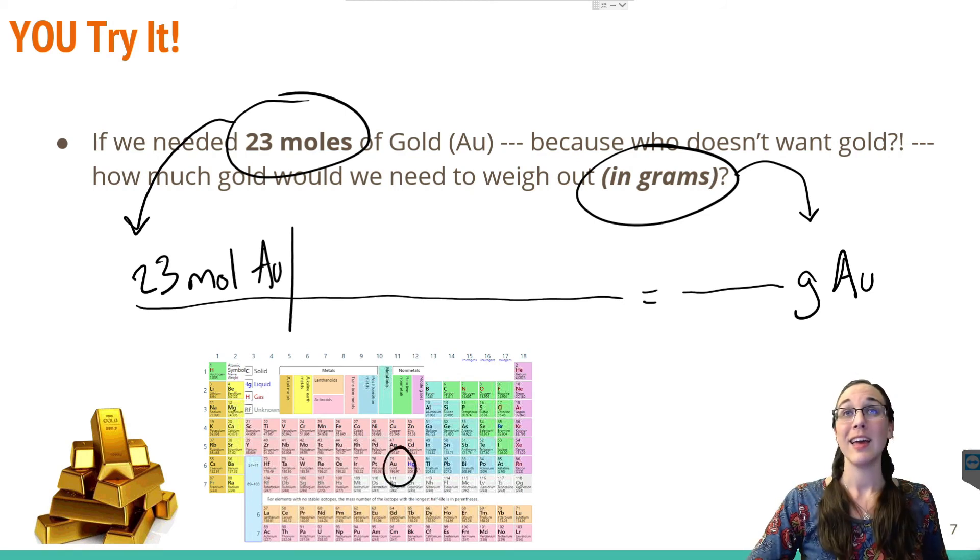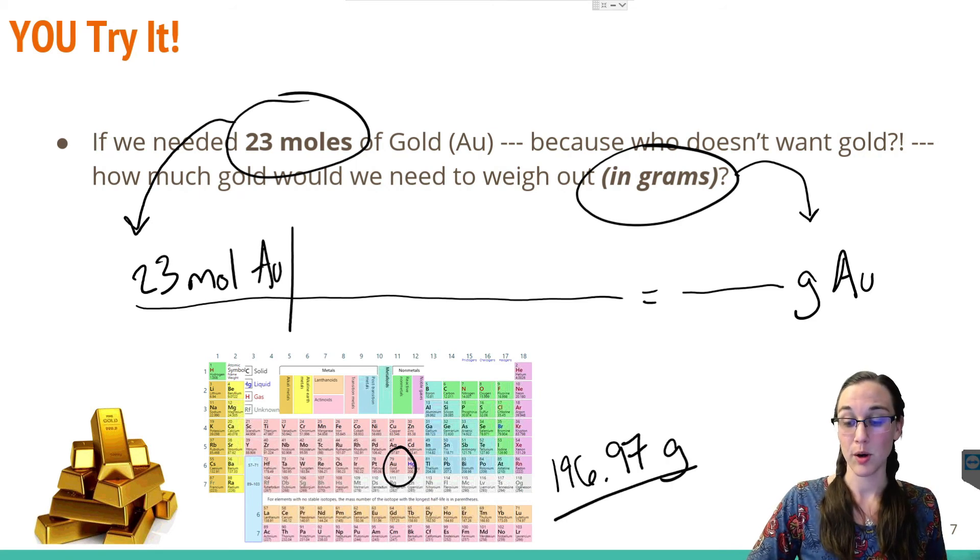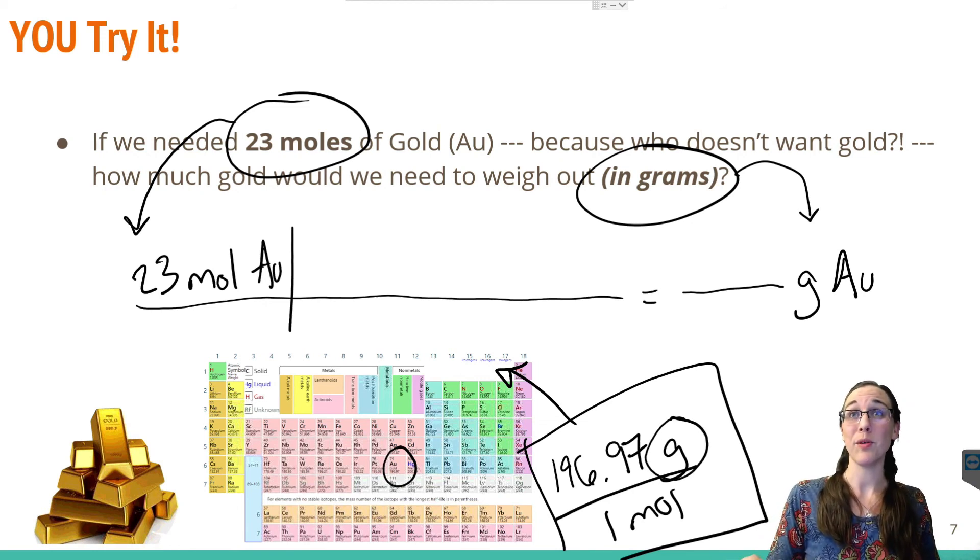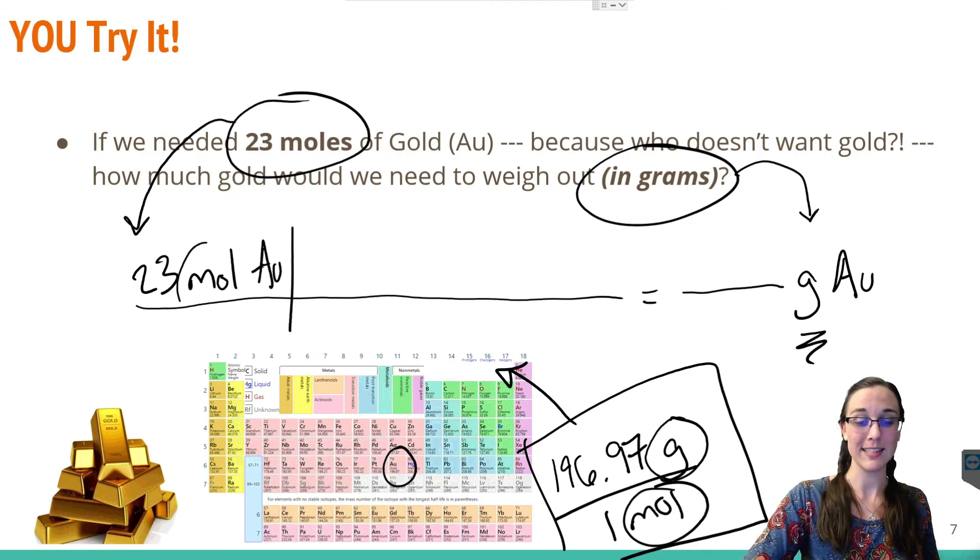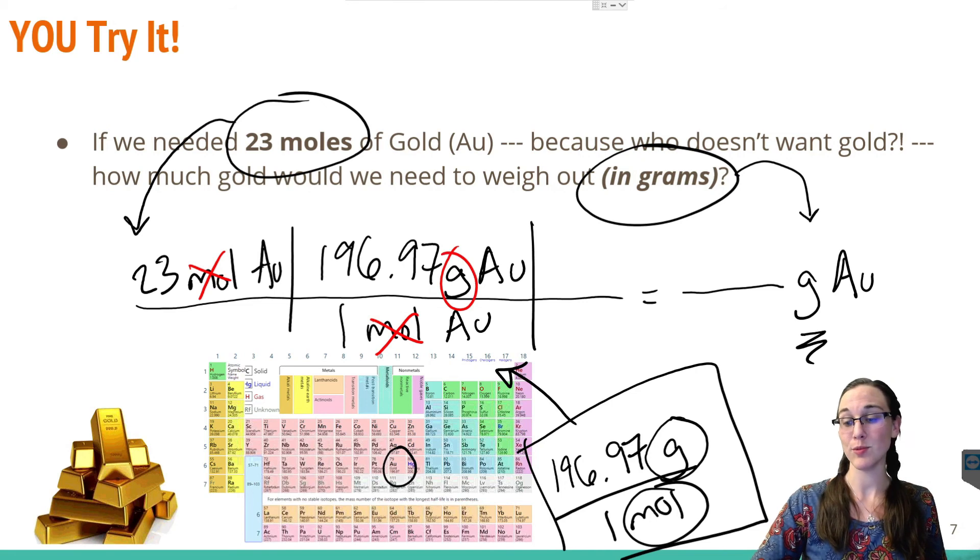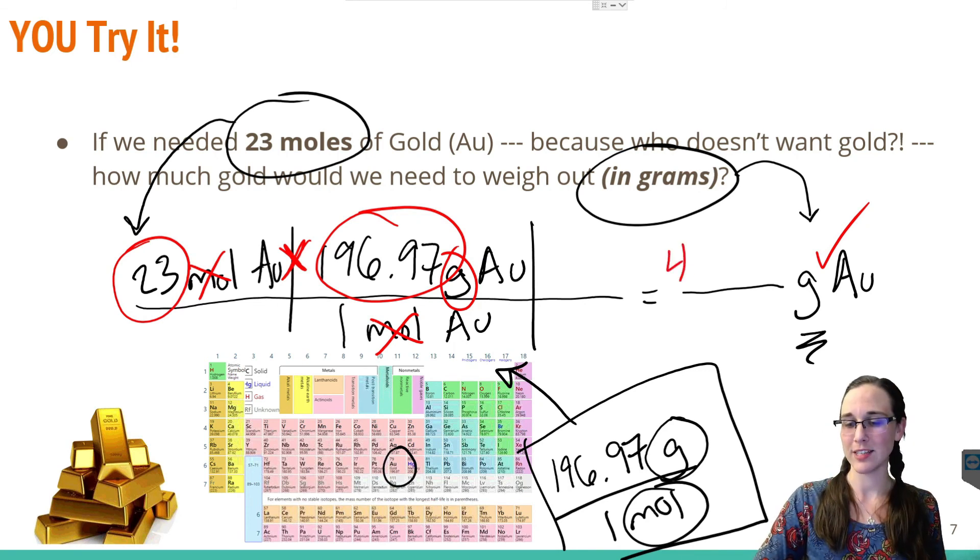Now to get from moles to grams, we're always going to use our conversion factor domino of molar mass. So we need to find gold on the periodic table. And gold is right there weighing in at 196.97 grams per one mole of gold. Now that's our little domino that we can plug in up here. Notice that we don't need to flip this domino around just as before because our grams we want on top. We want our goal units to go on top. So we end up with our goal and we want our moles to cancel with the mole that's here. So I'm just going to plug it in as it is. Alrighty then, now I can see that my moles cancel. I'm left with grams, which is in fact what I was going for. So all I have to do is 23 times 196.97 divided by one. So my final answer after plugging that into a calculator is a very large number weighing in at 4530.31 grams of gold on the scale.